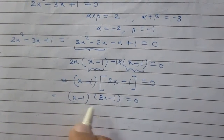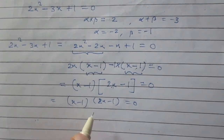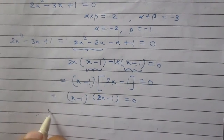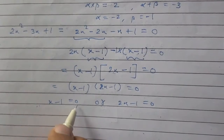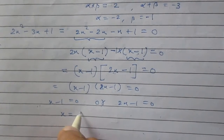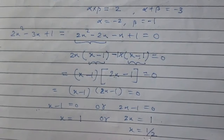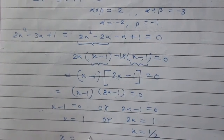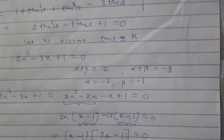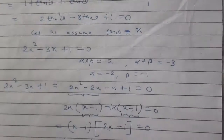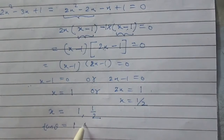The product of two factors equals zero only when either of them is zero. So either x minus 1 equals 0, giving x equals 1, or 2x minus 1 equals 0, giving x equals 1 by 2. Since we assumed x equals tan theta, we conclude that tan theta is equal to 1 or 1 by 2.